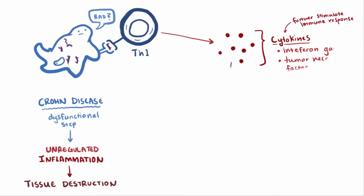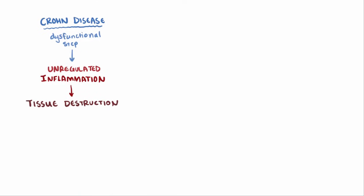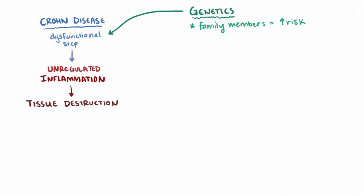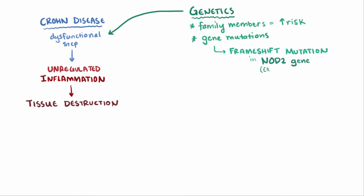This dysfunctional immune response is thought to be a product of genetics, and in fact, patients with family members that have Crohn disease are way more likely to develop it themselves. A number of genes have been identified and are thought to contribute to developing the disease. One of these is a frameshift mutation in the NOD2 gene, now called CARD15.